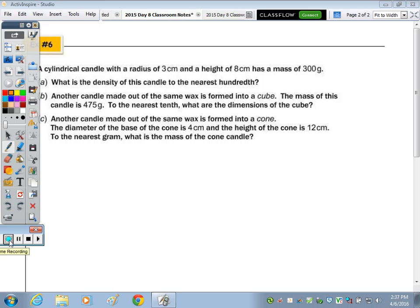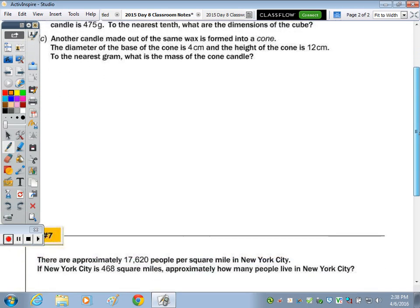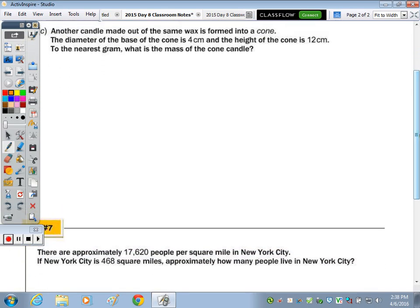In number six, we have a cylindrical candle with a radius of 3 centimeters and a height of 8 centimeters with a mass of 300 grams. Let's create three columns here for part A, part B, and C. Part A: what is the density of this candle to the nearest hundredth? So density, mass to volume. We're given what in that question? Mass of how many grams?